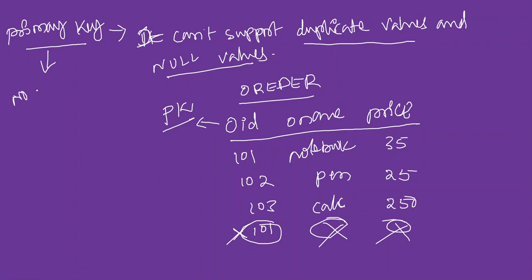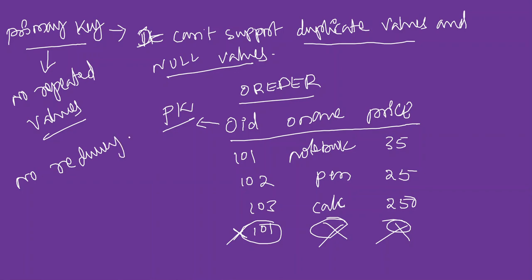Primary key means no repeated values — no redundancy in a field. Duplicate values are not allowed, and there must be no redundancy in field values. That is the primary key constraint.